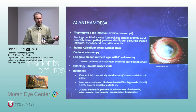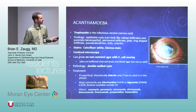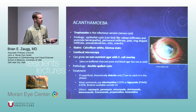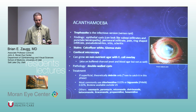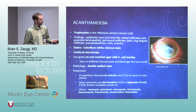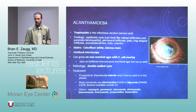Acanthamoeba — not as common in Utah but we see it occasionally. We use confocal microscopy and cultures to diagnose. Think of the double-walled cyst — acanthamoeba is like a fortress, really hard to treat. We use chlorhexidine and PHMB. Sometimes we ask patients to get Brolene from other countries — you can get it from Canada and France on Amazon.